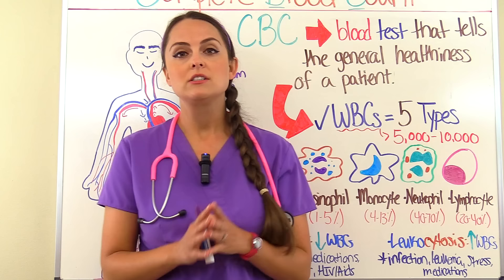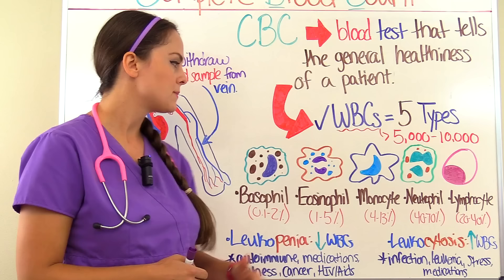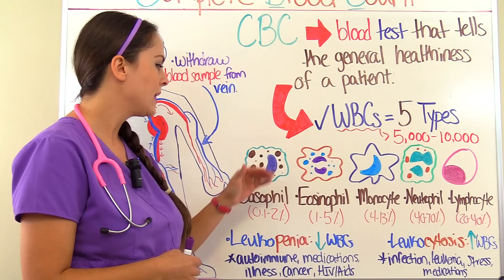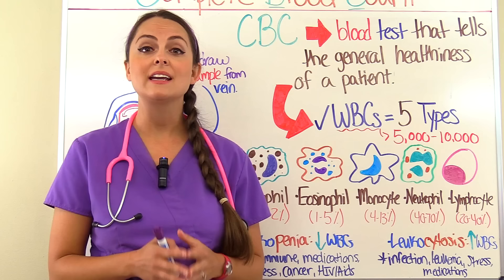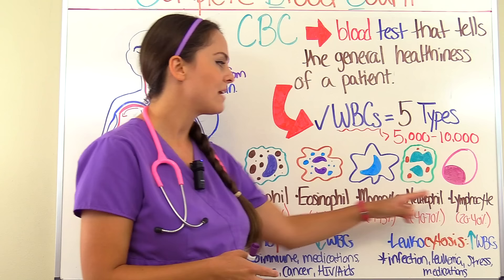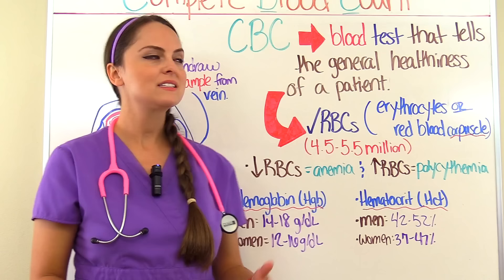Now let's talk about the five types of white blood cells. The first is the basophil, which plays a role in the inflammatory response and allergy response. The eosinophil plays a role in the allergy response, such as with asthma and parasitic infections. The monocyte plays a role in fighting infection and foreign substances. The neutrophil plays a role in bacterial infections. And lastly, the lymphocyte plays a role with viral infections.